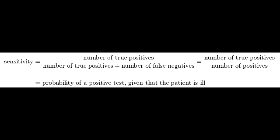Sensitivity is the true positive rate — the proportion of all people with disease who test positive, or the probability that the test detects disease when disease is present. The equation of sensitivity is TP over (TP plus FN) — true positive over true positive plus false negative.